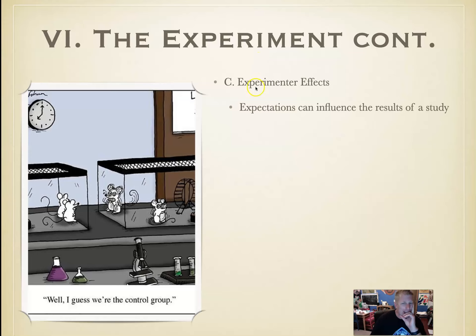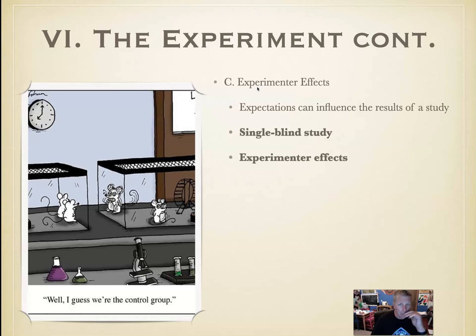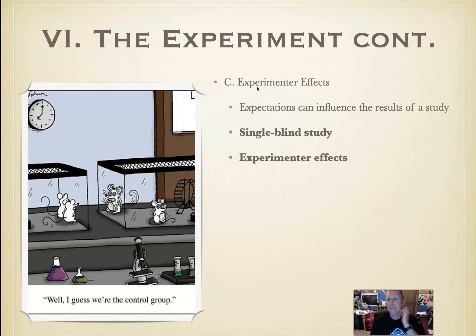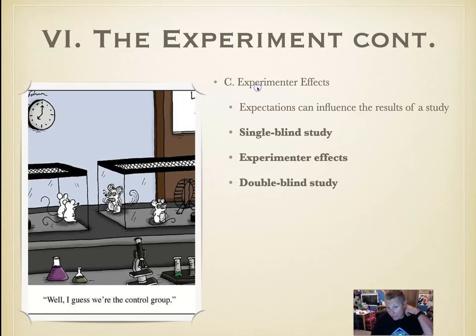Expectations can influence the results of a study. In a single blind study, the participants don't know which group they're in — control or experimental. Experimental effects occur when observers, knowing which group has the coffee for example, start picking up on ticks and believing the coffee has caffeine, biasing their observations.